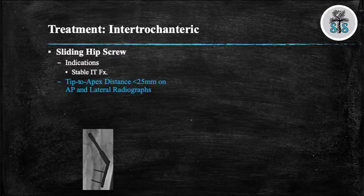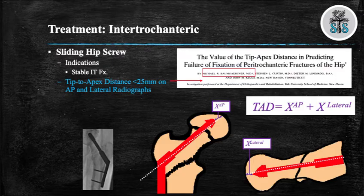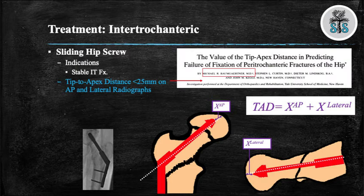The DHS allows for dynamic sliding of the femoral head and is indicated in stable IT fractures. A landmark study was performed in 1995 by Dr. Baumgartner, in which he studied 198 IT fractures treated with a DHS. In his study, 18 had screw cutout. Of those, the average tip-to-apex distance was 38 mm compared to 24 mm for patients that did not have screw cutout. The major take-home point is that the tip-to-apex goal should be less than 25 mm.